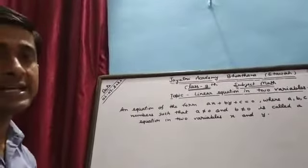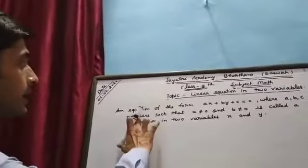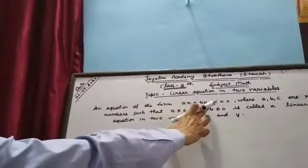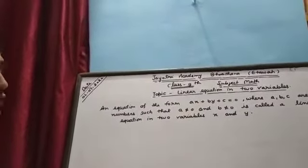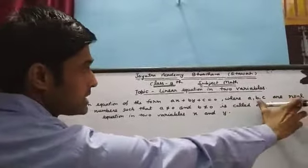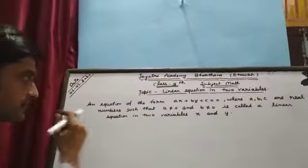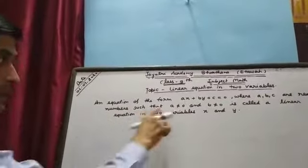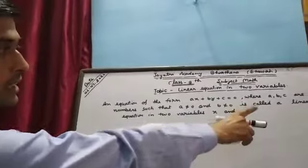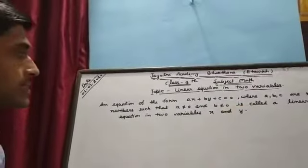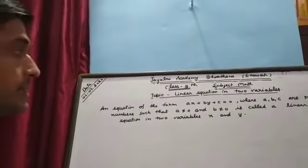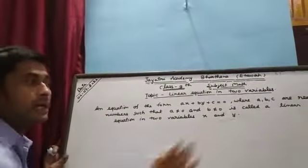First of all I will explain what is a linear equation. An equation of the form ax plus by plus c equal to zero, where a, b, c are real numbers such that a does not equal to zero and b does not equal to zero — this is called a linear equation in two variables, x and y.